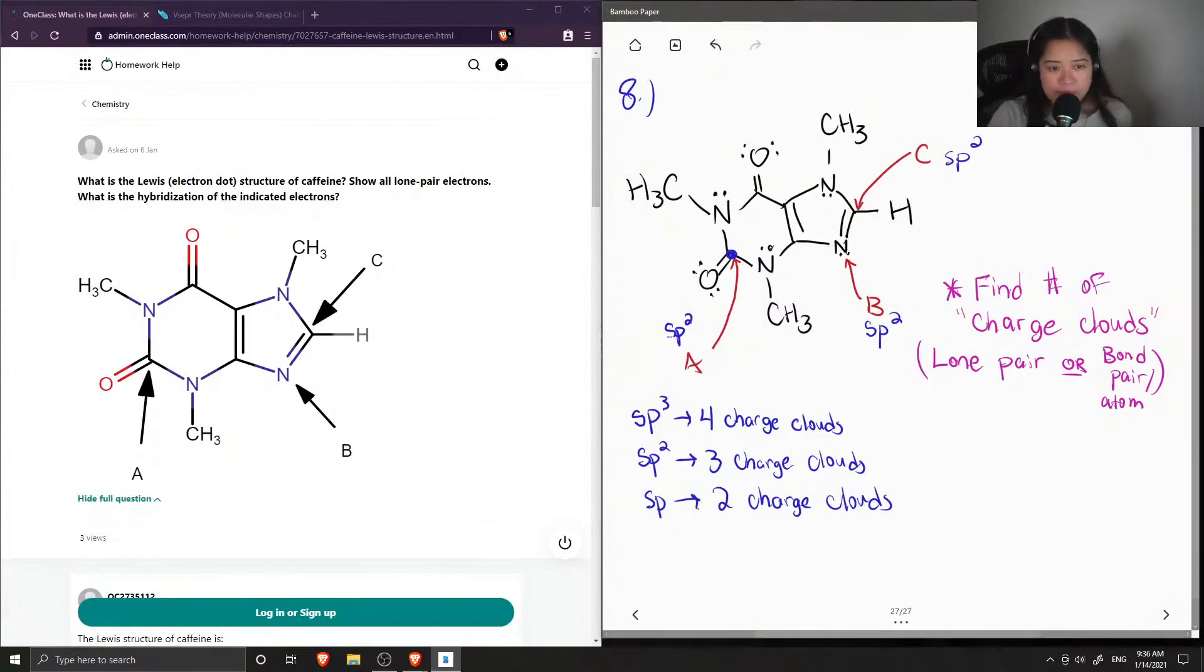So an example of sp3 would be like this carbon right here. It's bonded to three hydrogens and a nitrogen, so that's four bonded atoms or four charged clouds, so this would be sp3.